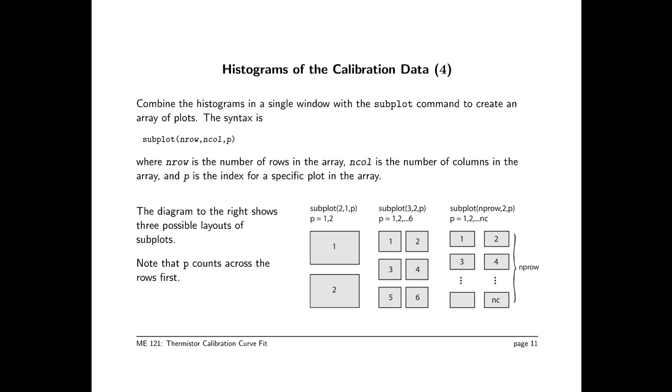The next operation here is to figure out how to display all these histograms. There is an ability to put multiple plots in a single figure window, and that's done with the subplot command. In general, subplot has three inputs. The first is the total number of rows in an array. The second is the number of columns in an array. So by array, I mean a rectangular arrangement of plots, as shown in the bottom right corner. So nrow is the number of rows of plot images. And ncol is the number of columns of plot images. And p is an index that tells us which of these we're working with.